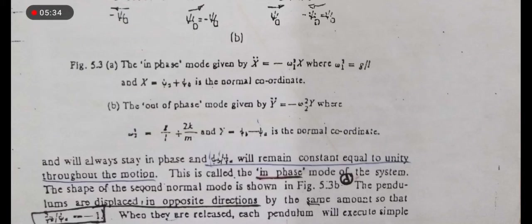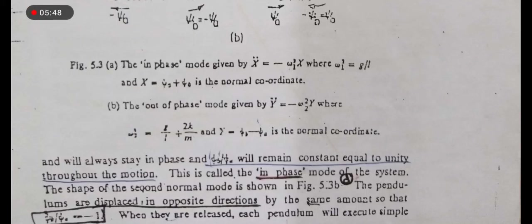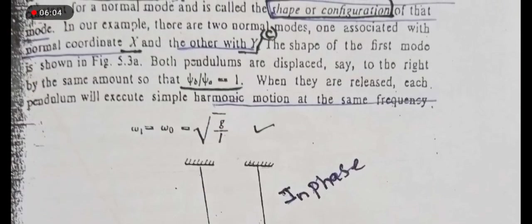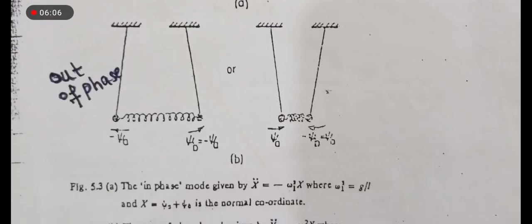Out-of-phase mode کے لیے: y double dot is equal to minus omega_2 square y۔ دوسرے phase کی angular frequency کیا تھی؟ omega_2 square is equal to g over l plus 2k over m۔ اور ہماری equation تھی y is equal to psi_b minus psi_a، کیونکہ psi_b is equal to minus psi_a تھا۔ پہلی figure یہ show کراتی ہے کہ دونوں always in-phase change کریں گے اور psi_b over psi_a will remain constant equal to unity throughout the motion۔